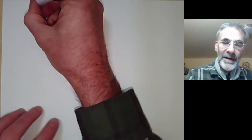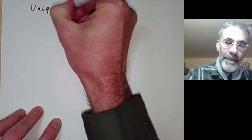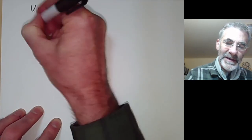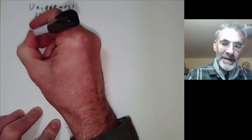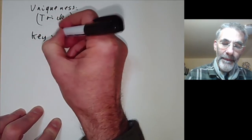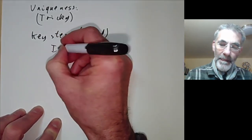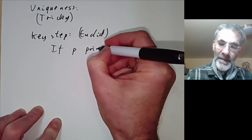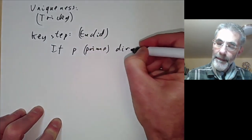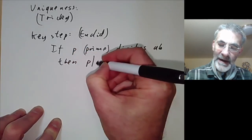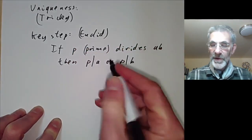The tricky part is to prove uniqueness of the decomposition. This is a little bit trickier than proving existence. Here is the key step, which is due to Euclid: if p is a prime and p divides some product a·b, then p divides a or p divides b, or possibly both.